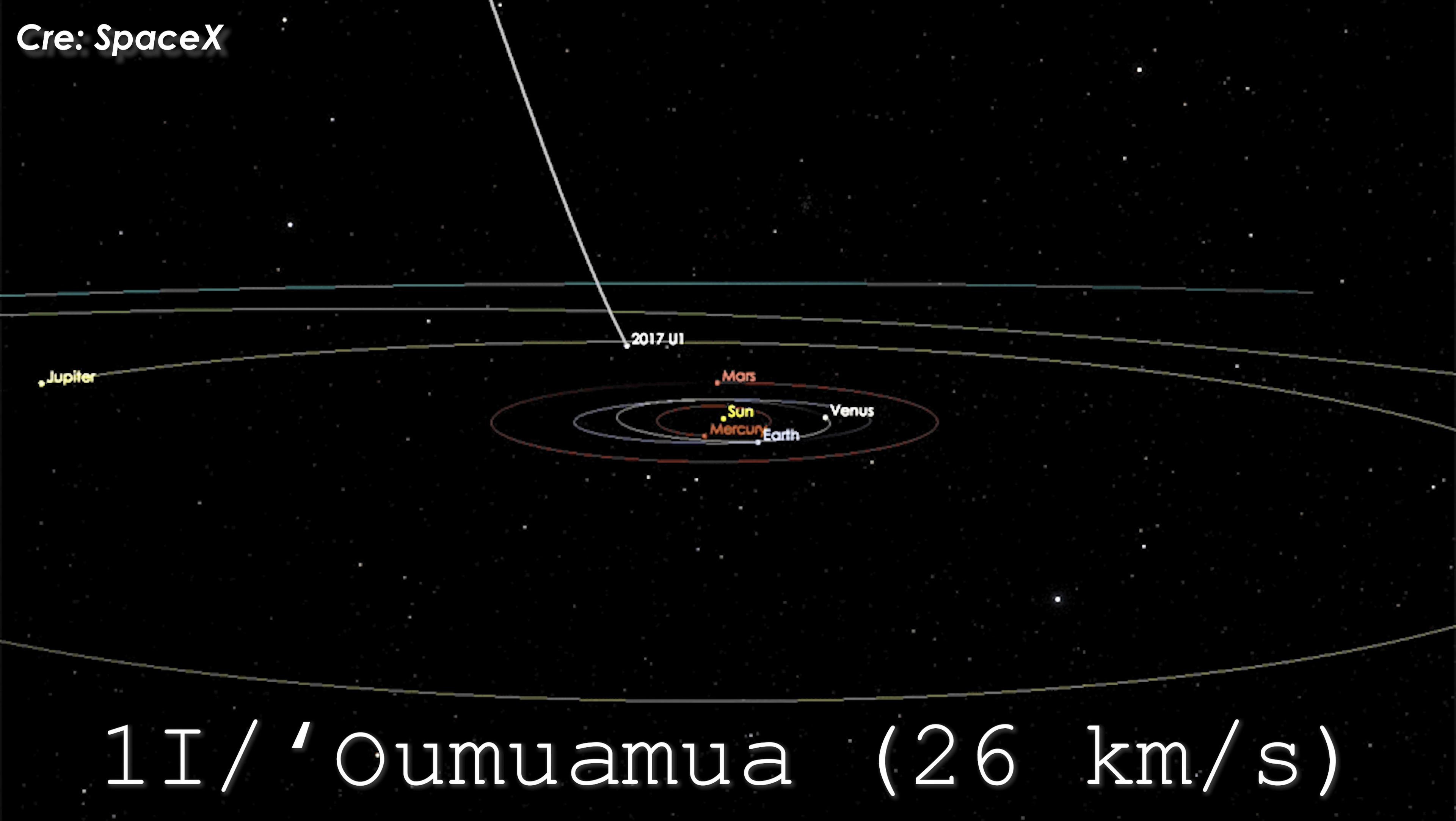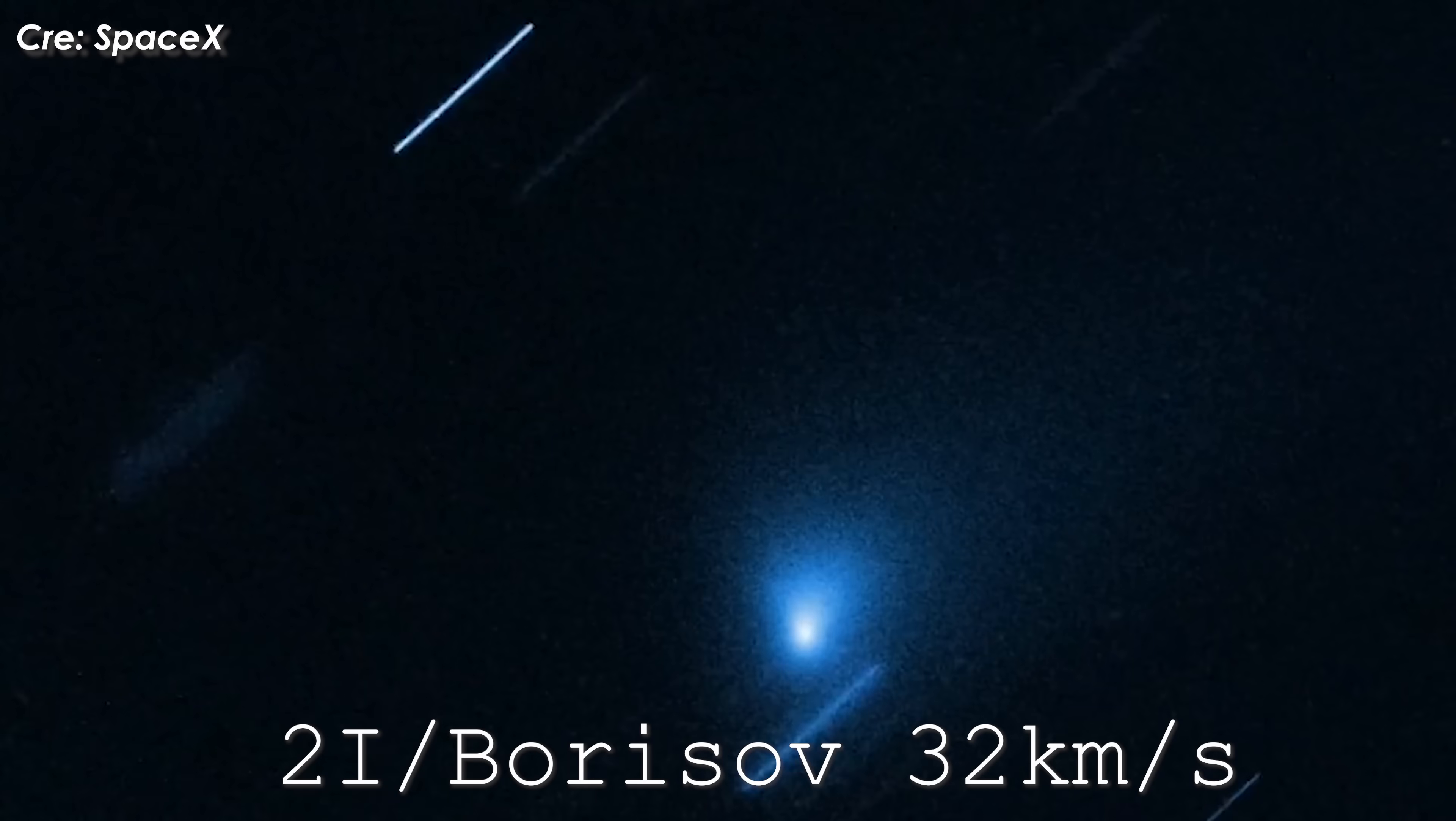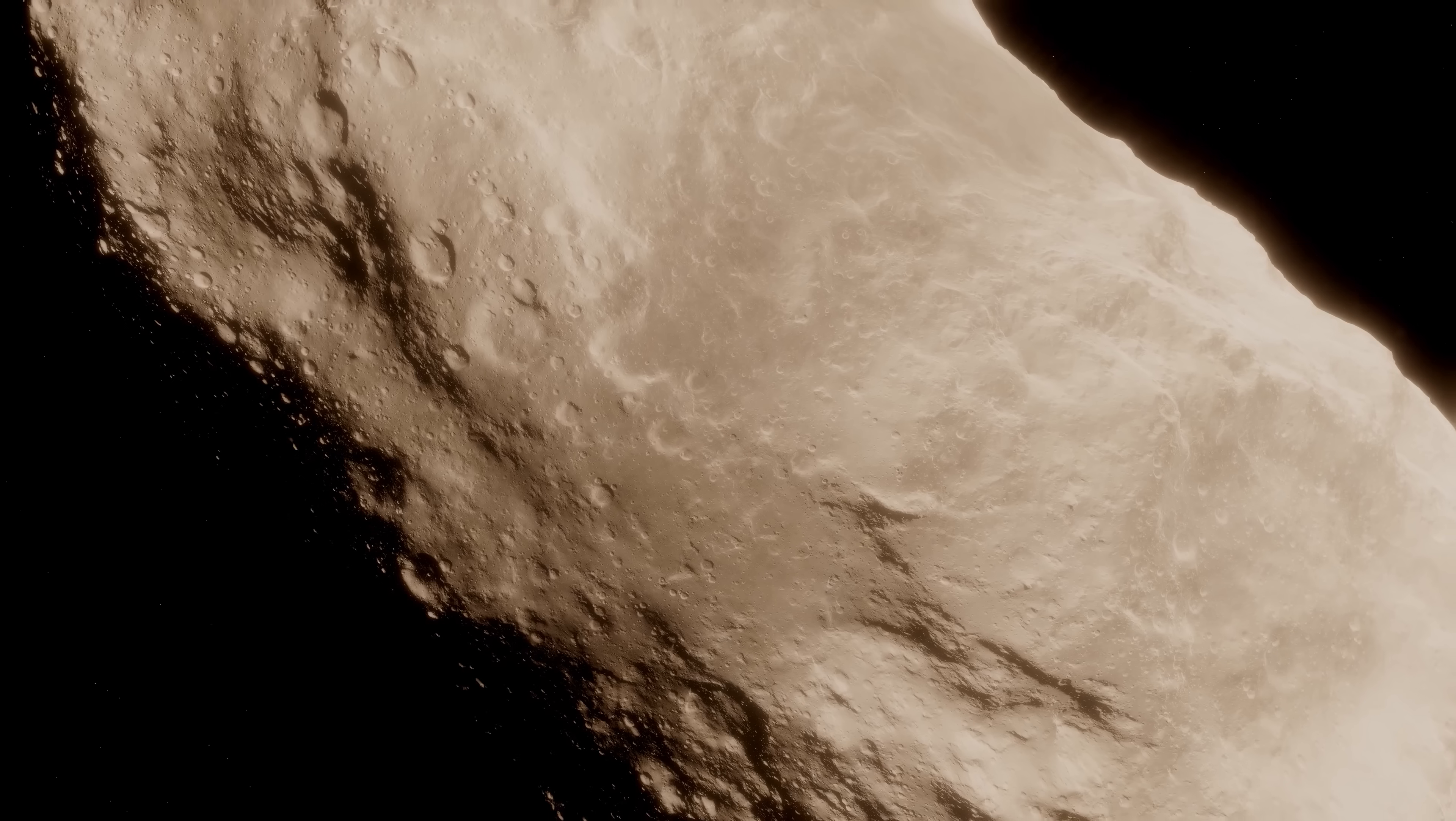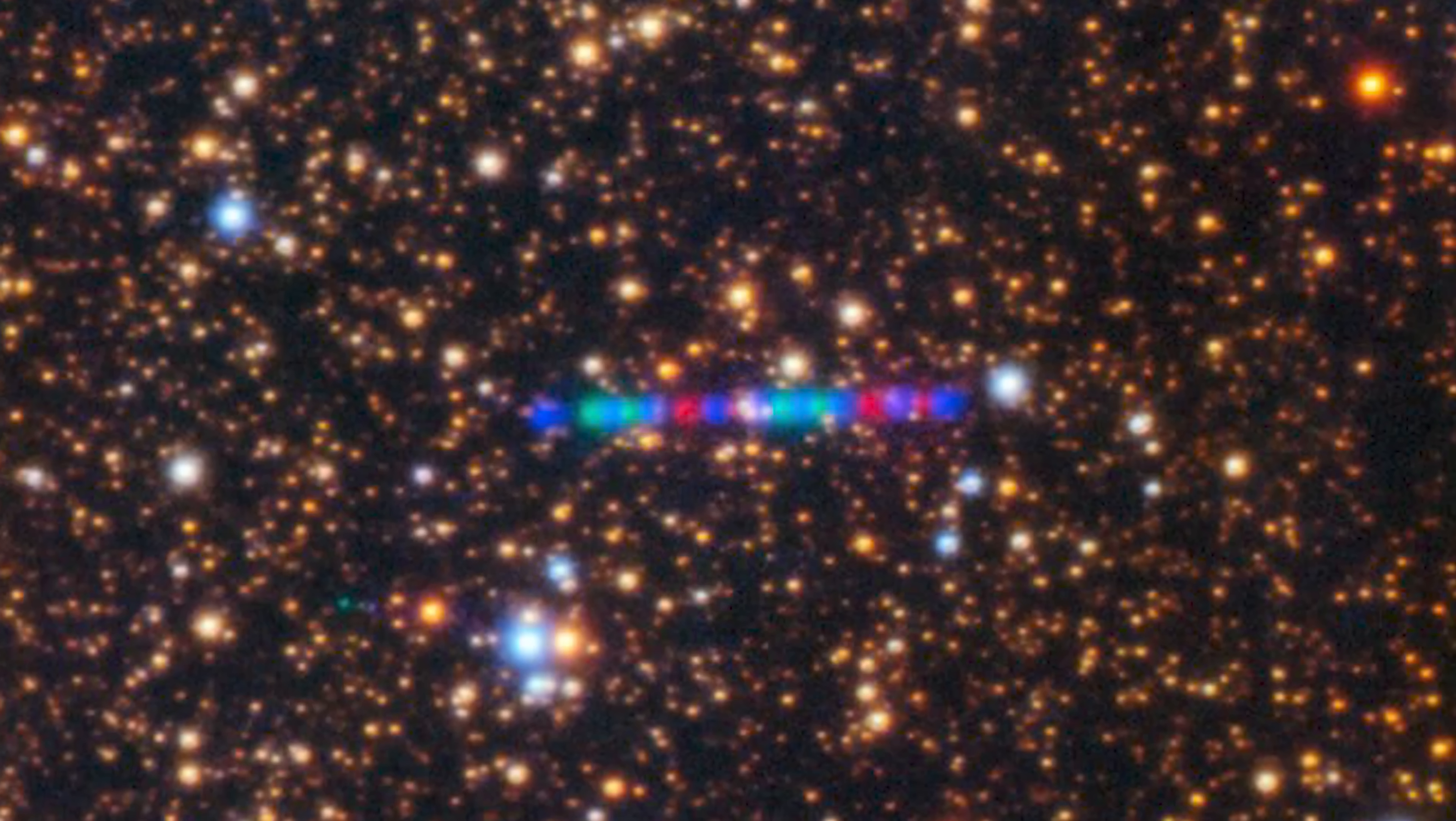This is significantly faster than the two previous interstellar objects: 1I Oumuamua at 26 kilometers per second, and 2I Borisov at 32 kilometers per second, further confirming its origin outside the solar system.